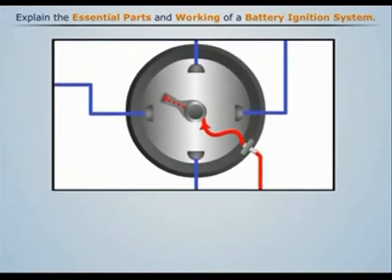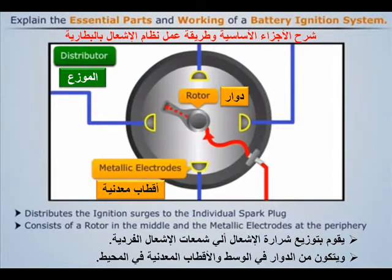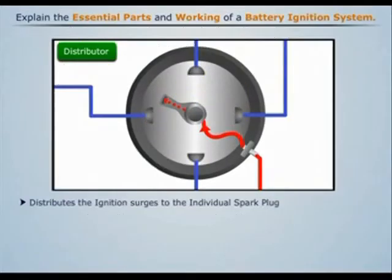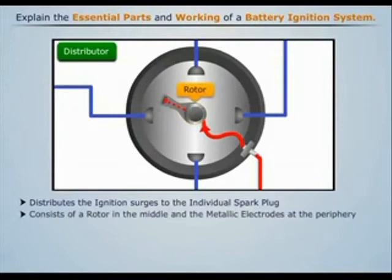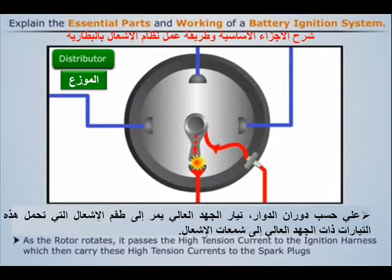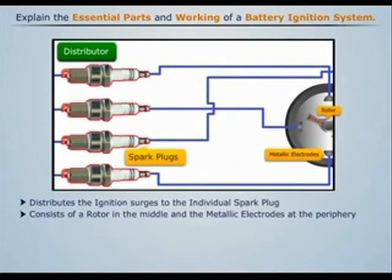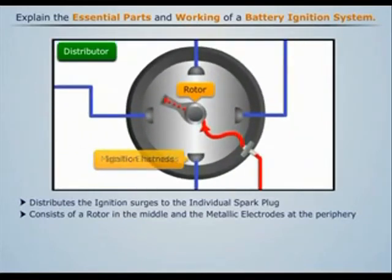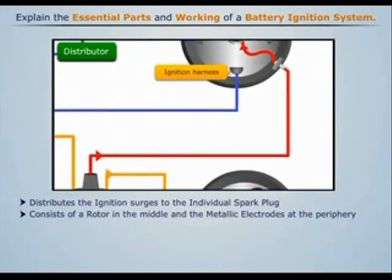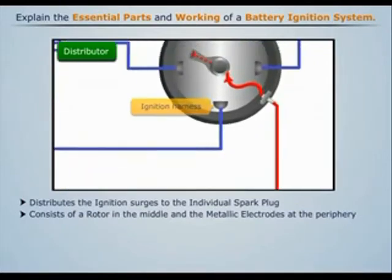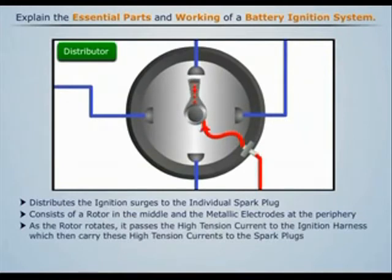A distributor is provided for distributing the ignition surges to individual spark plugs in the correct sequence and at the correct time. It consists of a rotor in the middle and metallic electrodes on the periphery. These metallic electrodes are directly connected to the spark plugs and are also known as ignition harnesses. The secondary winding of the ignition coil is connected to the rotor of the distributor, which is driven by the camshaft. As the rotor rotates, it passes the high-tension current to the ignition harness, which then carries these currents to the spark plugs.